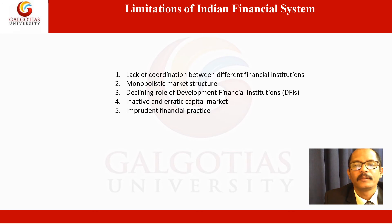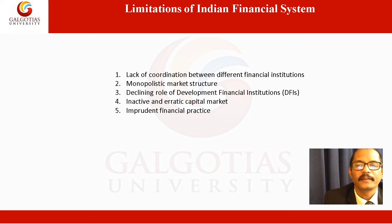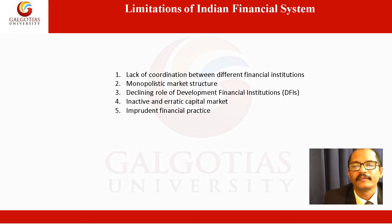The fourth limitation is an inactive and erratic capital market. The important function of any capital market is to promote economic development through mobilization of savings and their distribution to productive avenues. As far as industrial finance in India is concerned, corporate companies are able to raise their financial resources through development banks, so they need not go to the public or to the capital market. Moreover, they don't resort to the capital market since it is very erratic and inactive. Investors prefer investments in physical assets over financial assets. The weakness of the capital market is a serious problem in our financial sector.